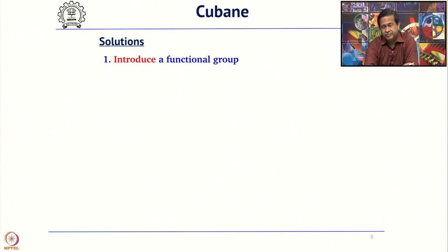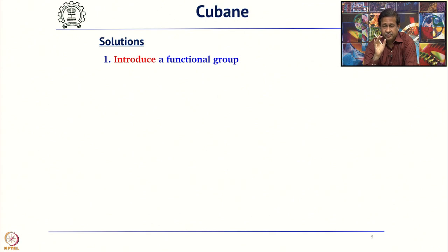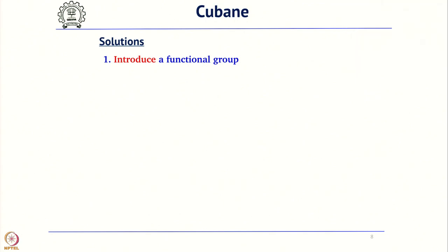First of all, as mentioned, Cubane does not have any functional group. You need either a functional group or a strategic bond because that only will act as a handle for further retrosynthesis. Whenever you do not see a functional group or a strategic bond in your target molecule, the first thing you should do is introduce a functional group.